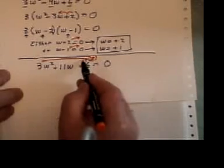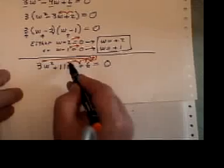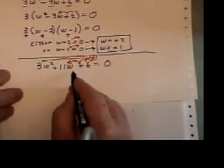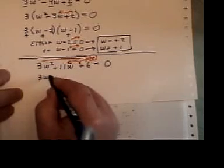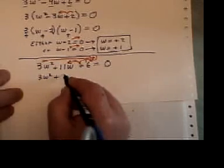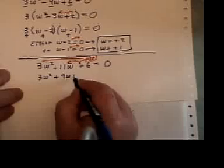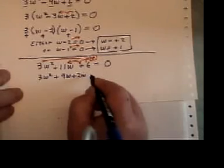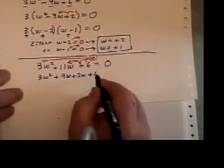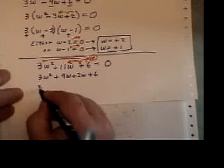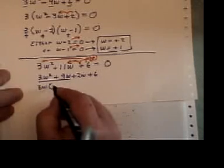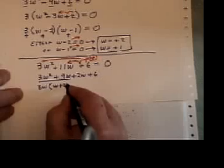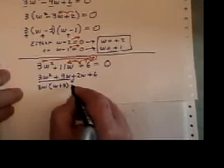So what multiplies to make 18 and adds up to 11 is 9 and 2. So when I factor this thing, I can break up the middle term into 9 and 2 like that. 3 goes into both of those terms and so does w. I bring down the plus sign.